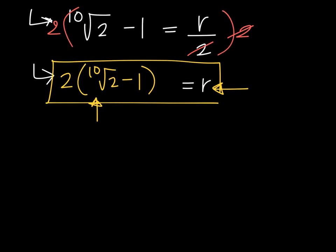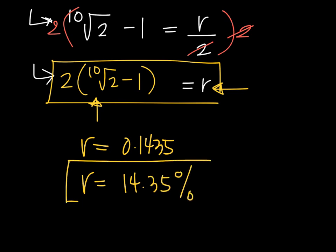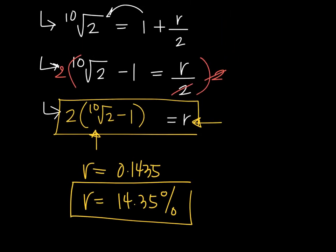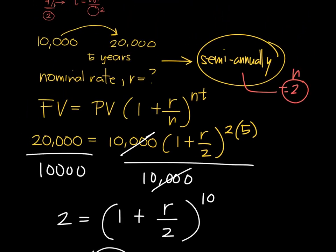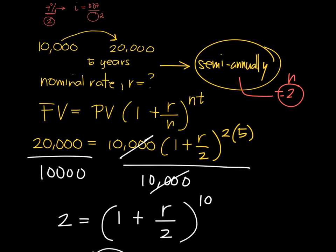R equals 0.1435 or 14.35%. That's how large the nominal rate should be so that you can have the 10,000 double to 20,000 in just 5 years.